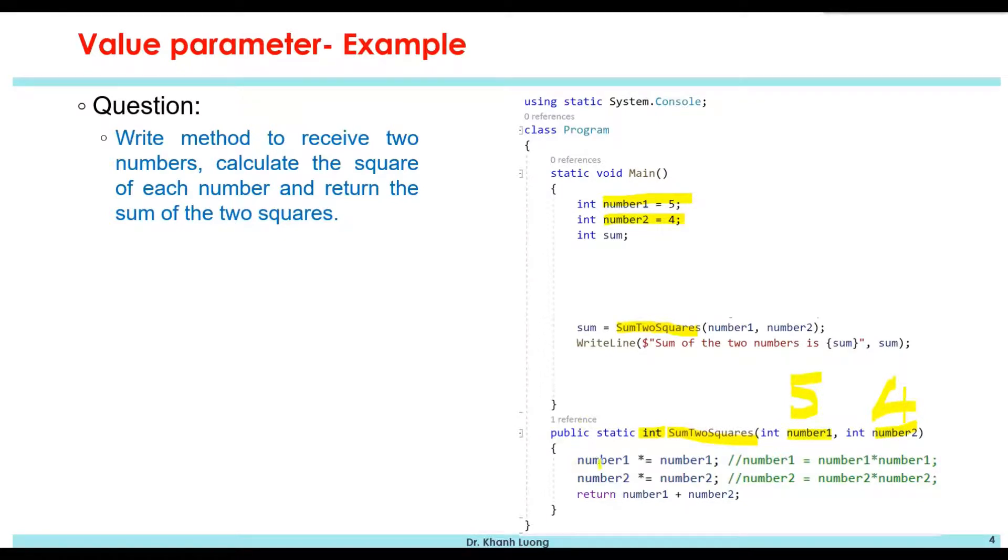Inside the method, number1 equals 25, number2 equals 16. And that's why this method will return the value 41 to the main method. So when you display the value of the sum of the two numbers here, you will have the value 41 of the sum variable.